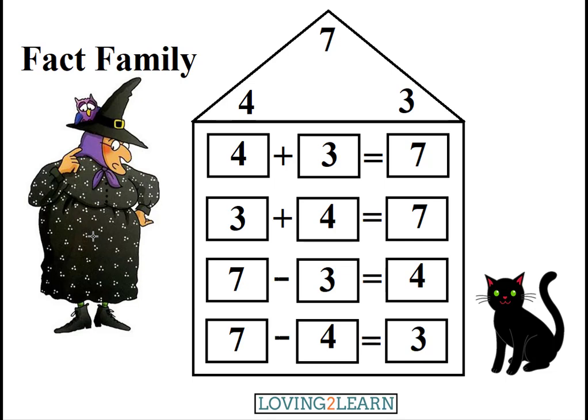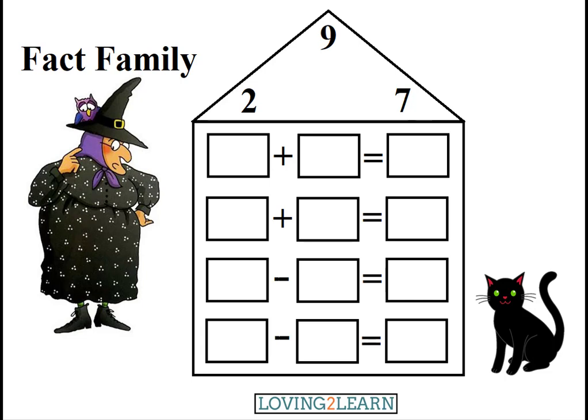We have our first fact family! Mildred says, I'm starting to get this. We use 3 numbers — 7, 4, and 3 — and we make 4 problems: 2 with addition and 2 subtraction problems. Oh, this is fantastic! Can we try another one, Midnight? Sure, says Midnight. With a flick of his tail, Midnight has 3 more numbers for our next fact family.